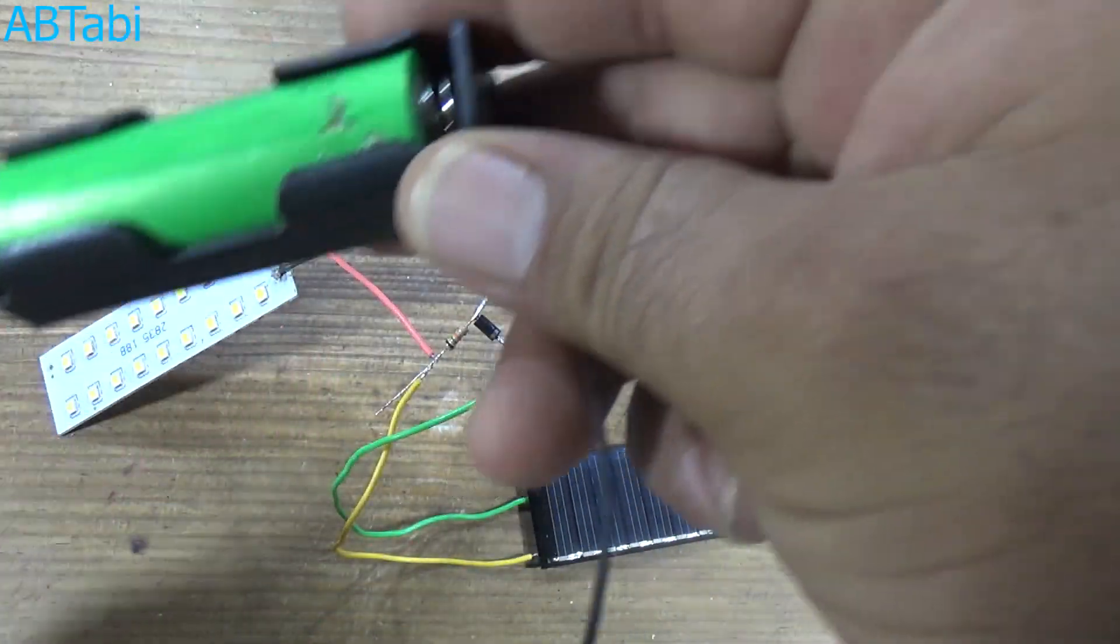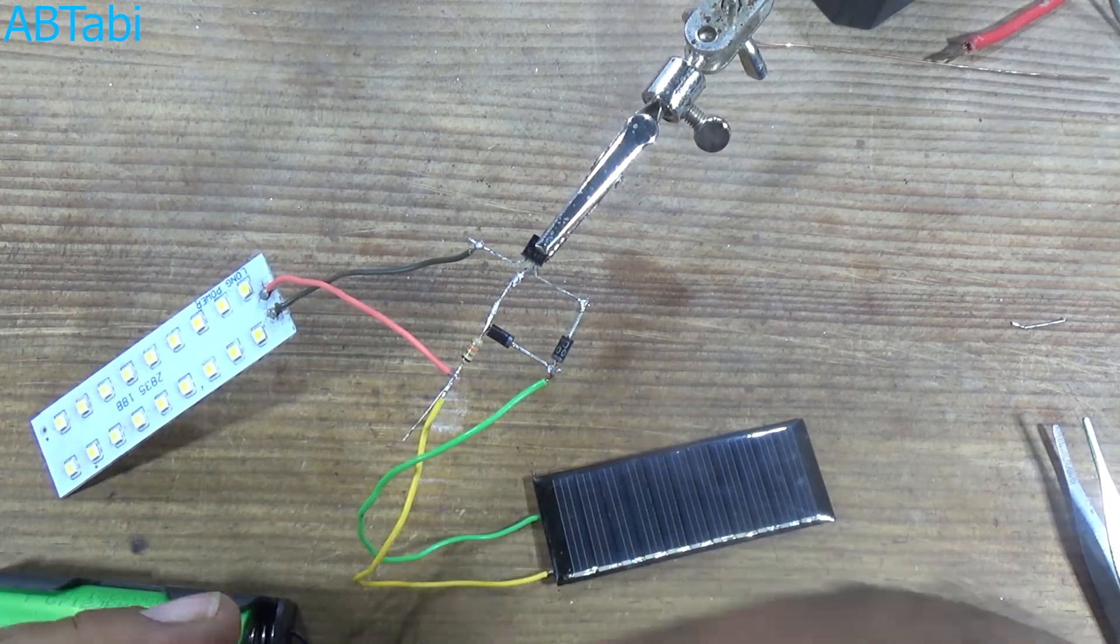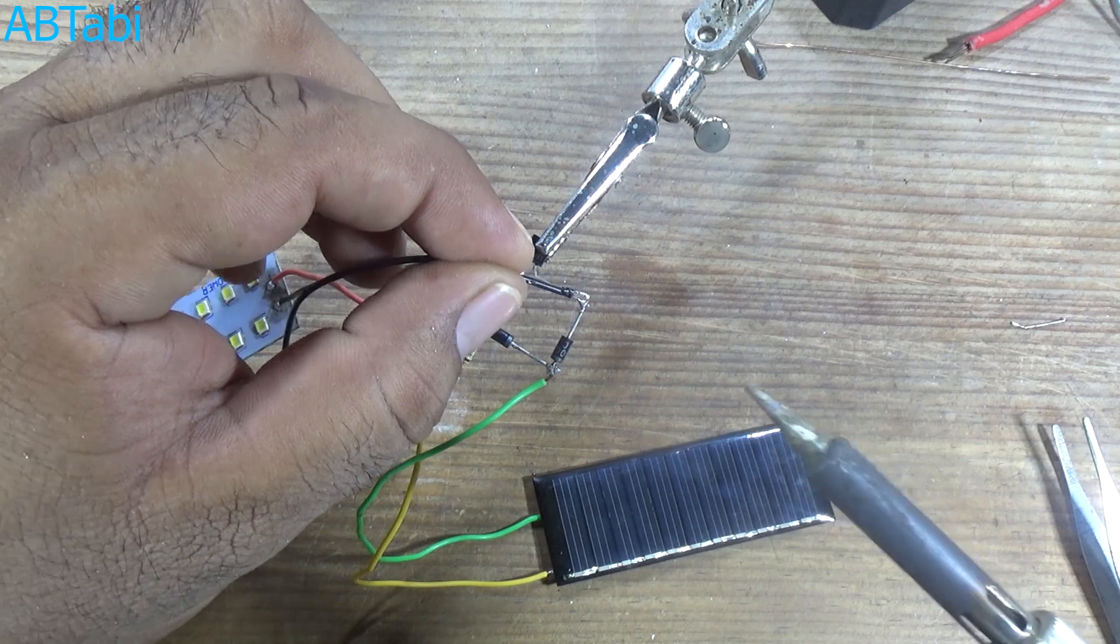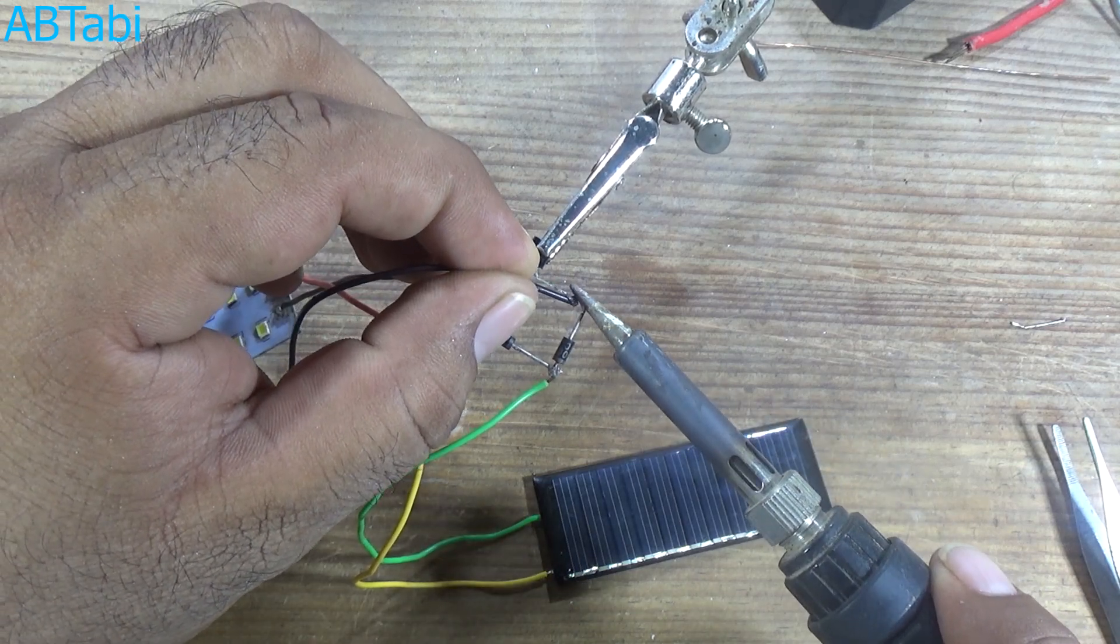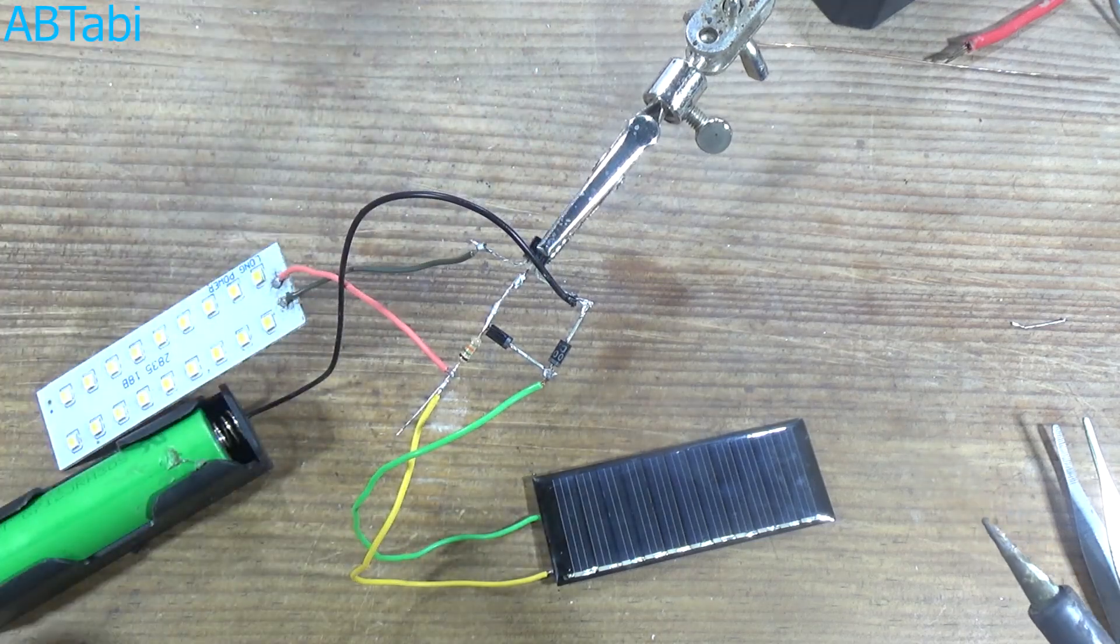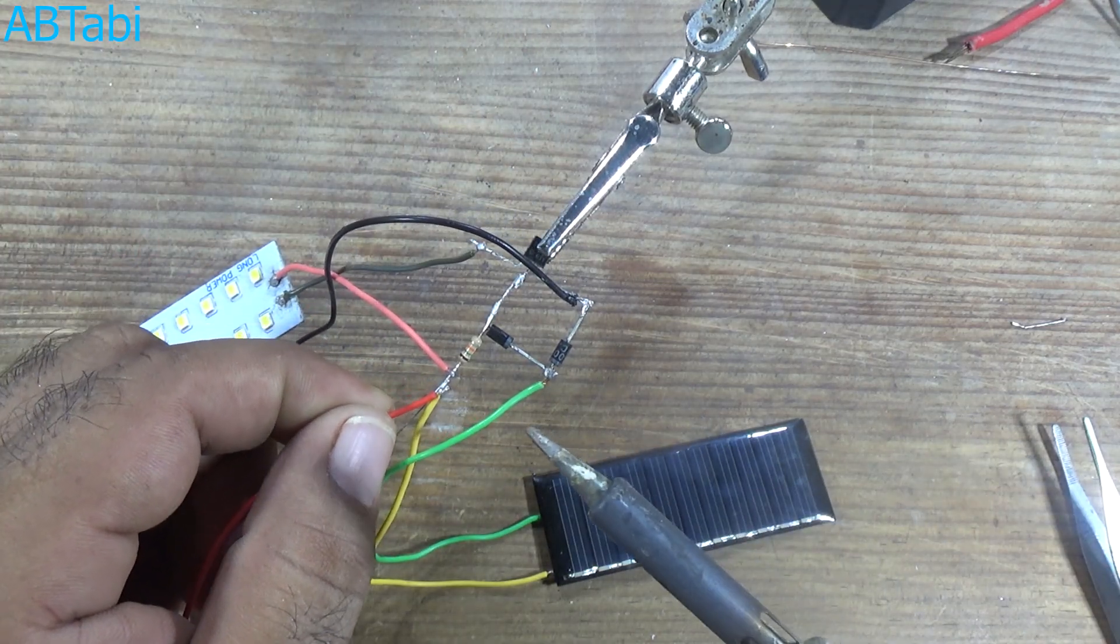4 volt battery. Battery negative side connects with transistor emitter pin, and positive also connects with the 1 5k ohms resistance. Circuit is complete and ready for the test.